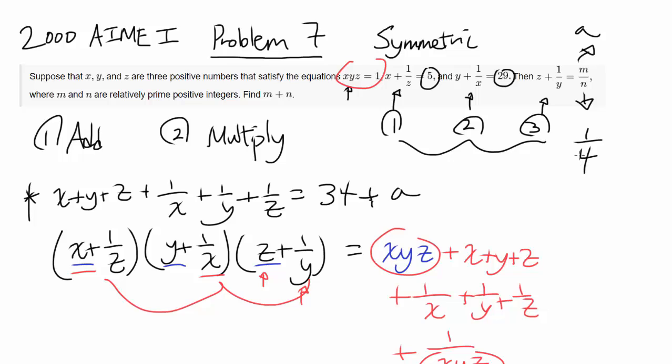So a is 1 fourth. So what we are looking for, m over n turned out to be 1 fourth, and 1 and 4 are relatively prime. And they want us to find m plus n. So our answer is 1 plus 4 or 5. On AIME, you want to write 005.